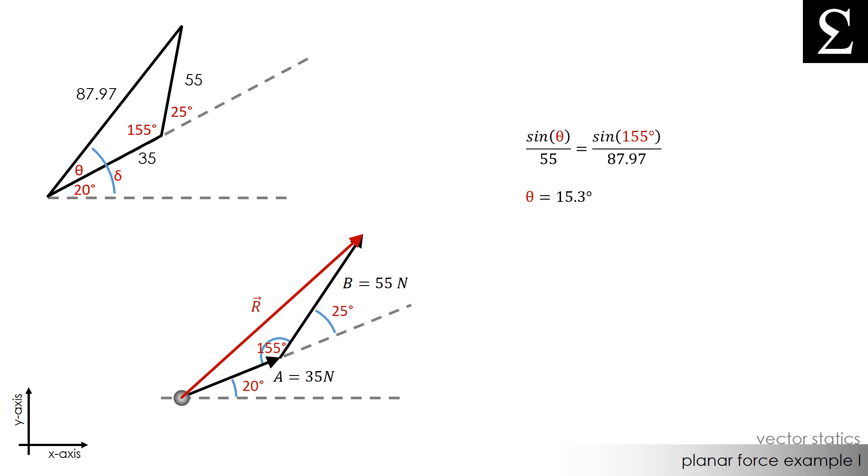We calculate theta to be 15.3 degrees. Now, the angle delta would simply be the sum of 20 degrees and our theta angle. 20 degrees plus 15.3 degrees is 35.3 degrees. This means that our resultant vector R has a magnitude of 87.97 newtons, and it's acting at an angle of 35.3 degrees above the horizontal.